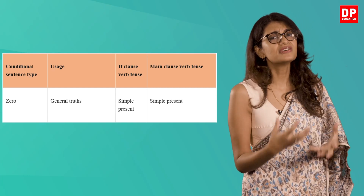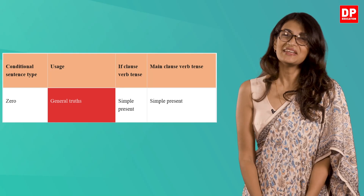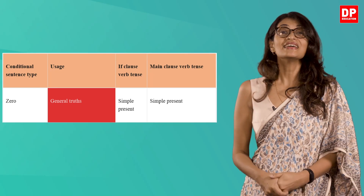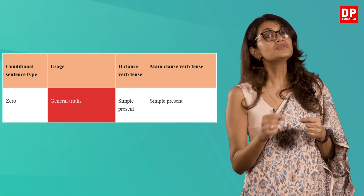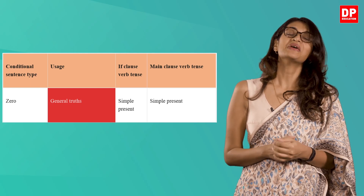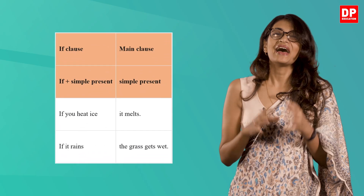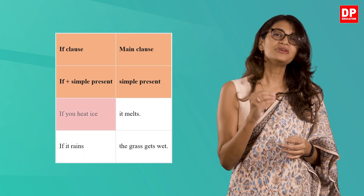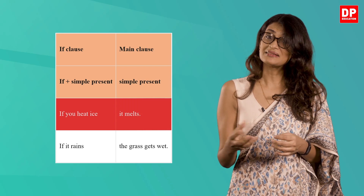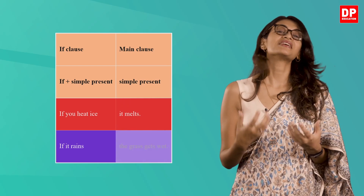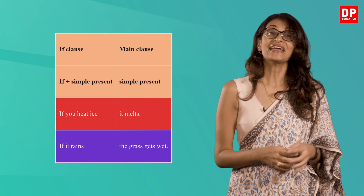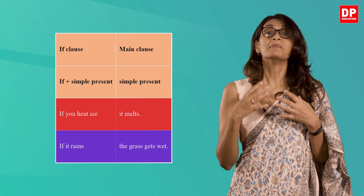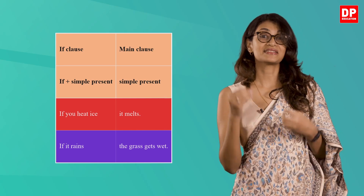The zero conditional is often used to refer to general truths. The tense in both parts of the sentence is the simple present. In zero conditional sentences, the word 'if' can usually be replaced by the word 'when' without changing the meaning. Look at the examples: 'If you heat ice, it melts.' 'If it rains, the grass gets wet.' The if clause is constructed using if plus simple present, and the main clause is also constructed using the simple present.